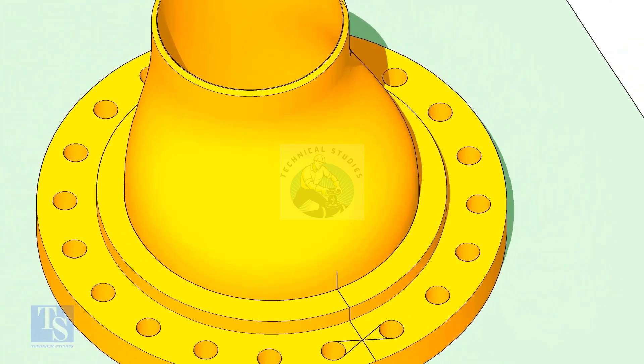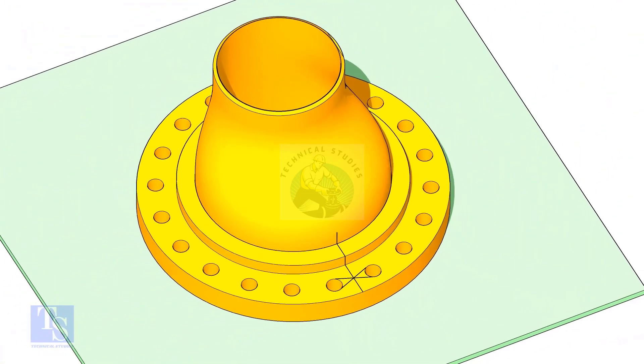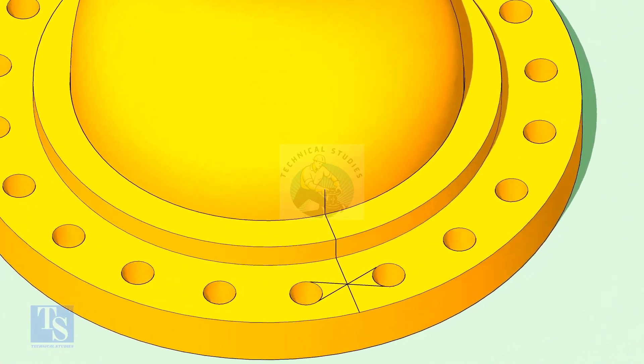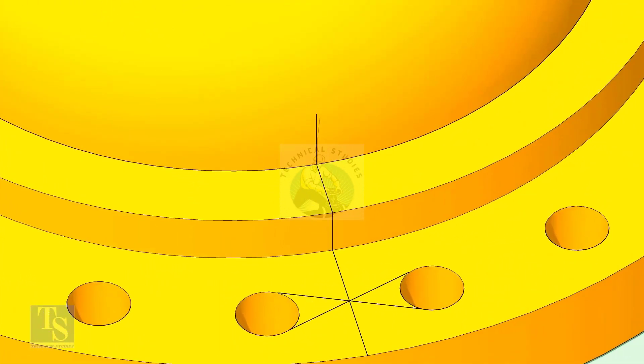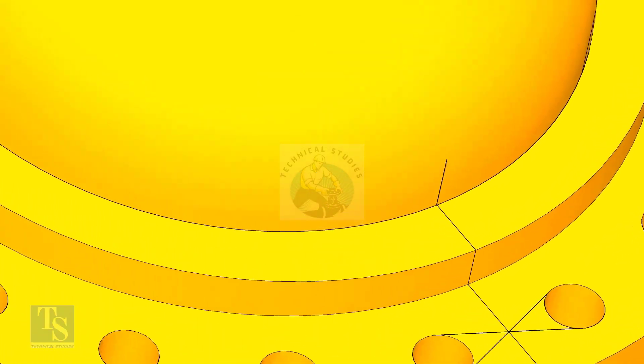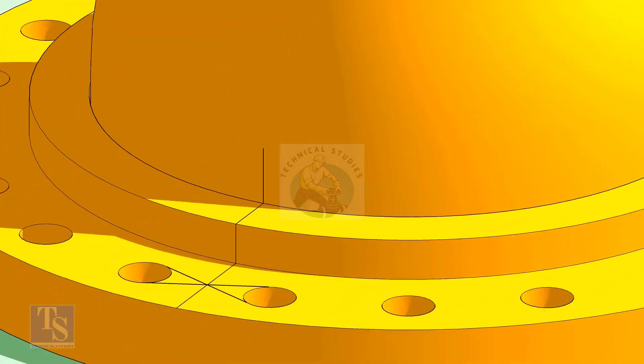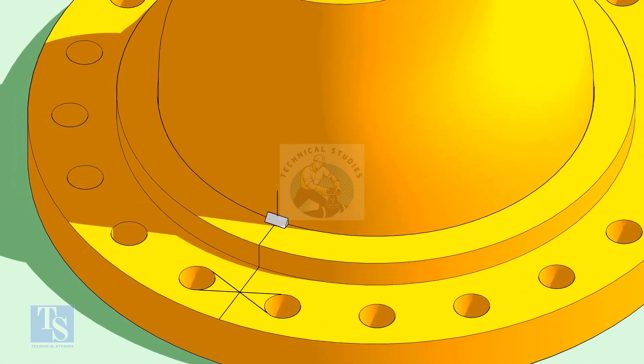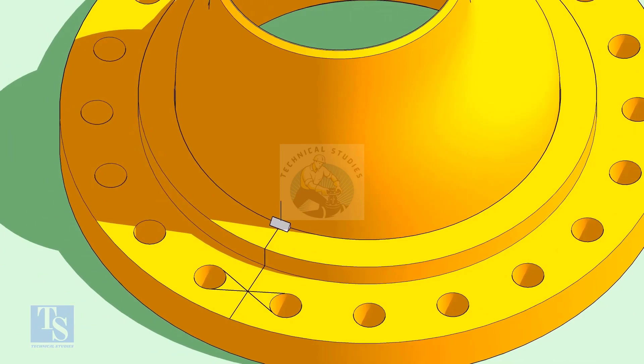Now put the reducer on the nuts in the flange. Match the center lines of the flange and the reducer. Tack weld 0 to 180 and 90 to 270 degree sequences.